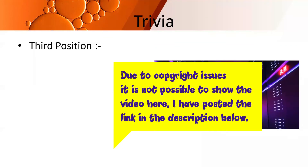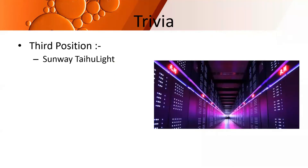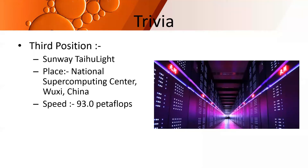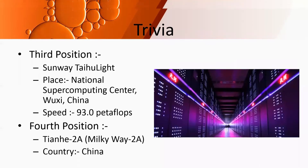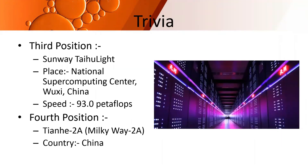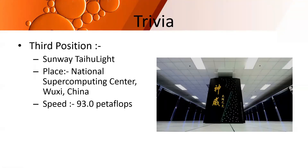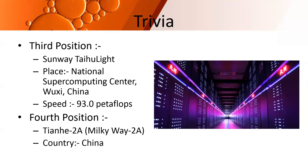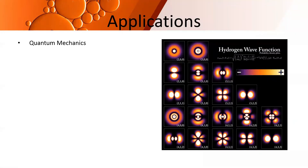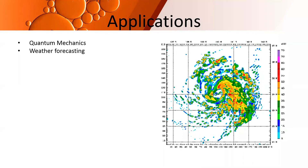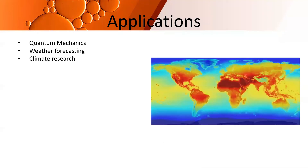Third position is held by China's Sunway TaihuLight with a speed of 93 petaflops. Fourth position is held by Tianhe-2 (Milky Way 2), also by China. Applications of supercomputers include quantum mechanics — a branch between physics and chemistry studying atoms and molecules — and weather forecasting. Weather refers to temporary conditions like tonight's rain, while climate refers to permanent conditions over an area, like the Sahara's arid and dry climate.